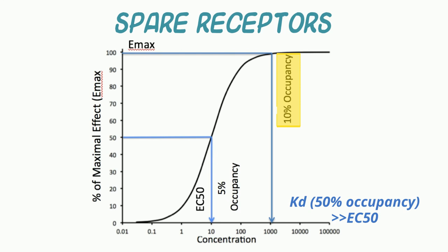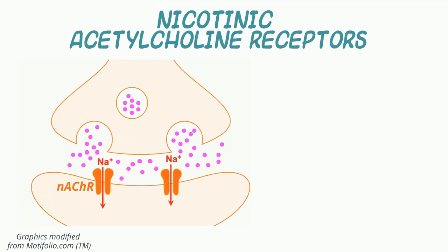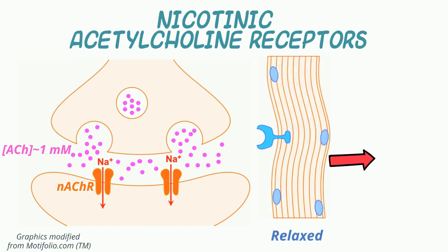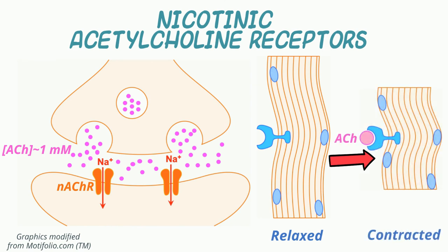A classical example of spare receptors is found in the nicotinic acetylcholine receptor system. These low-affinity receptors are linked to sodium channels. The low affinity of these receptors allows synaptic acetylcholine — normally at a high concentration of one millimolar — to rapidly dissociate from its receptor to end the initiating neurotransmitter stimulus. The acetylcholine is then destroyed by synaptic acetylcholinesterase. Once depolarized, these receptors undergo temporary desensitization. As a result, to maintain the potential for repetitive stimulation at normal physiological rates, additional receptors must be recruited to maintain contraction. Spare receptor capacity thus provides a mechanism for obtaining maximal response despite a relatively low affinity of the receptor.